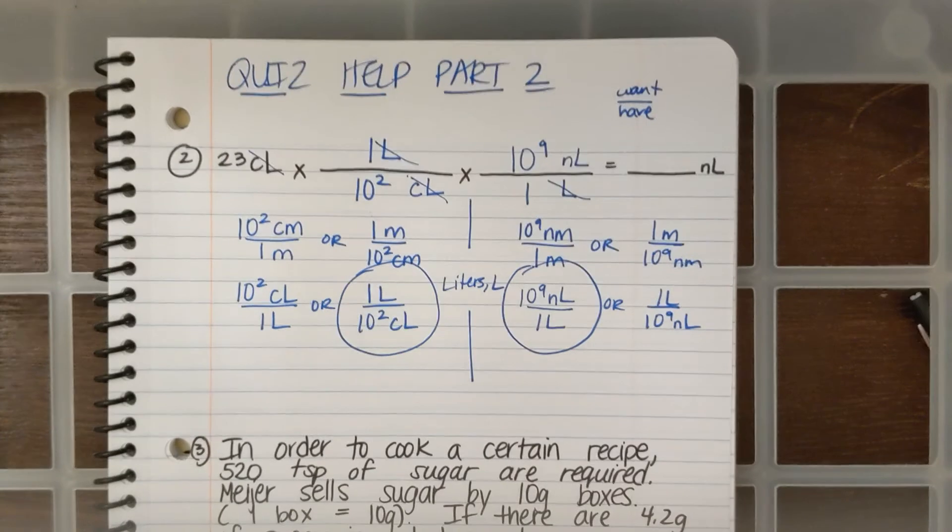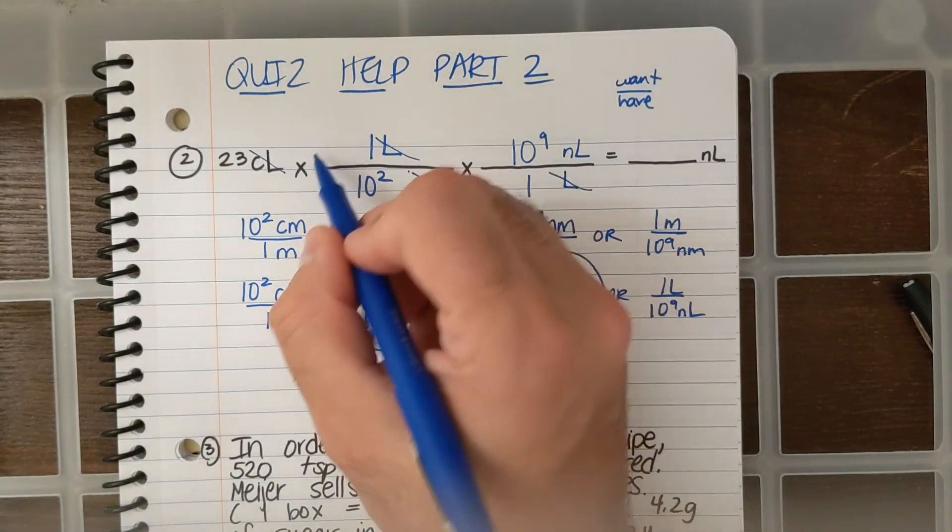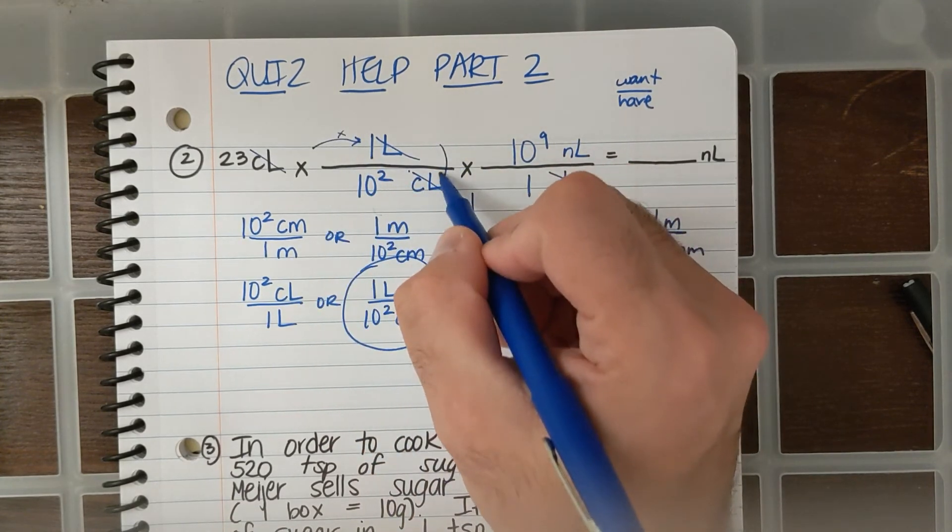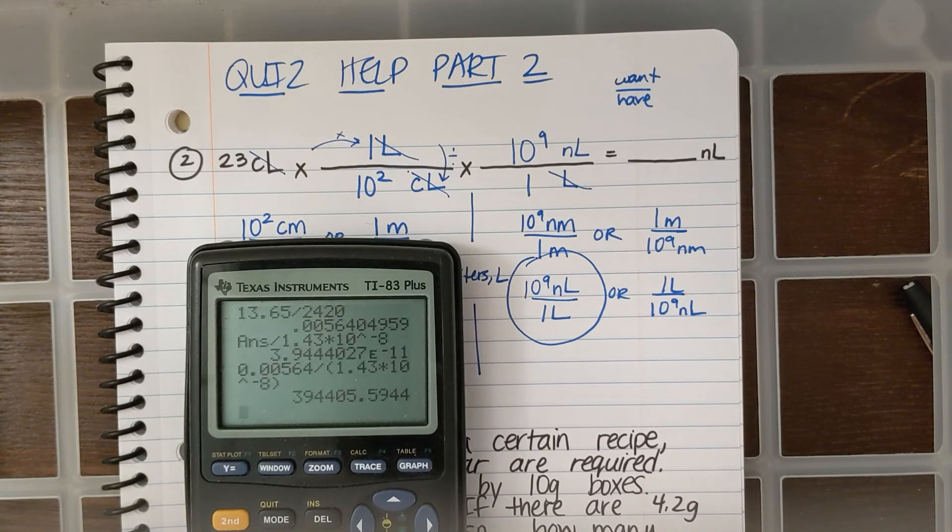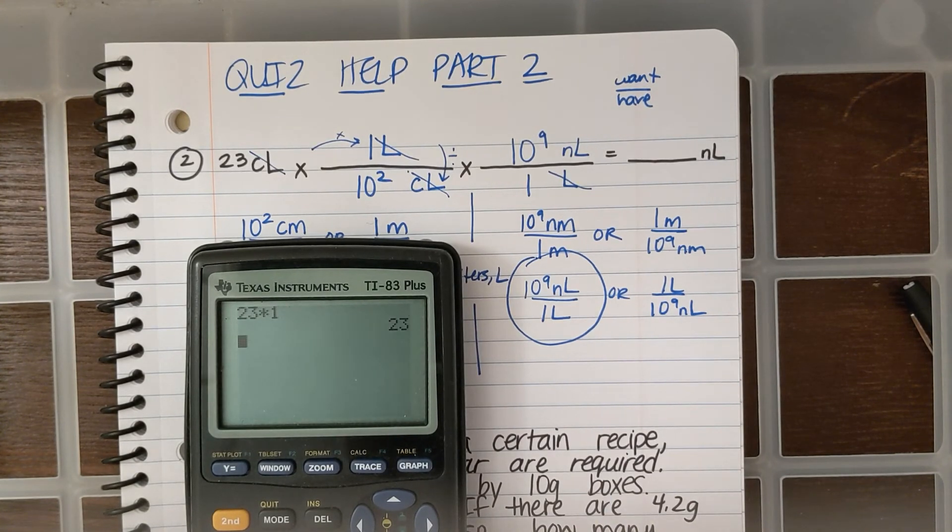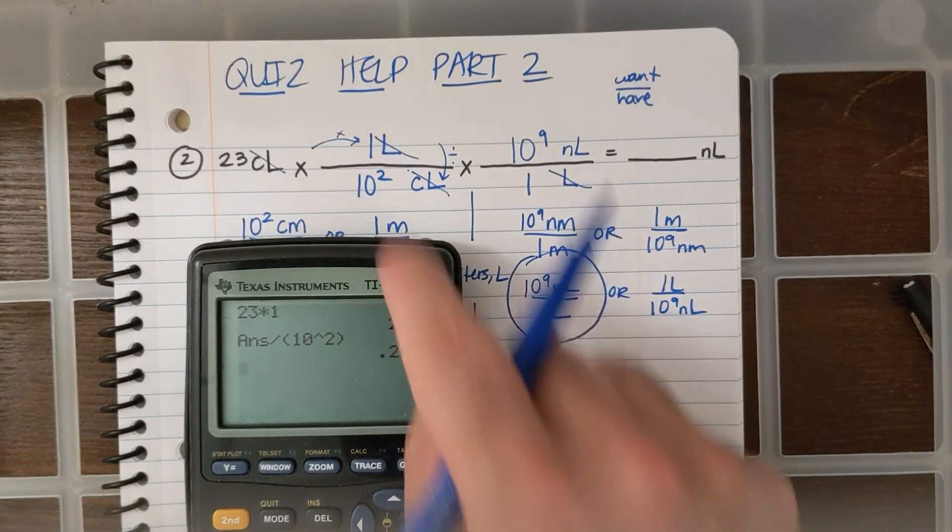Now, I'm going to do my math. 23 centiliters times 1 divided by 10 to the second. So, I'm going to do 23 times 1 divided by 10 to the second, raised to the second. And I get 0.23.